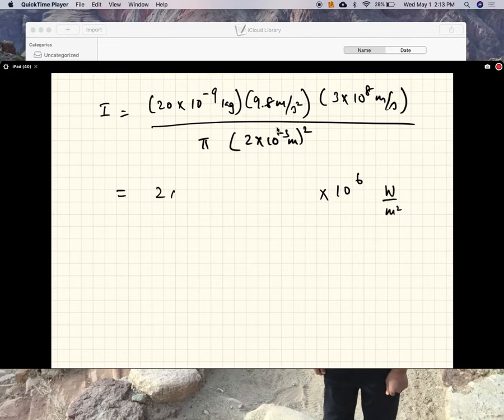2 times 9.8 times 3 divided by 4 pi. Oops, that's 2 squared, which makes it 4 pi. So the intensity is...